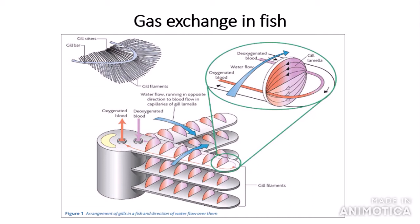Now you need to know about gas exchange in fish. Fish carry out their gas exchange through gills, which are flaps on the sides of them. The gills contain gill filaments which are at right angles to each other — this orientation increases the surface area to increase the rate of diffusion of oxygen from the water to the blood. Within these gill filaments we have lamellae, which are deep folds within the gills. These deep folds further increase the surface area to increase the rate of diffusion.